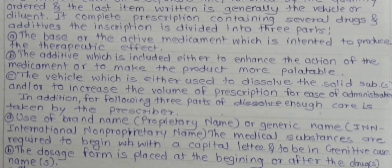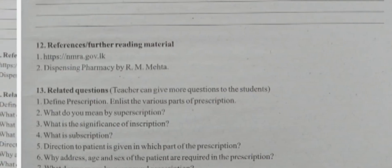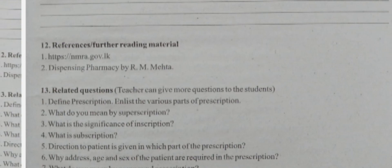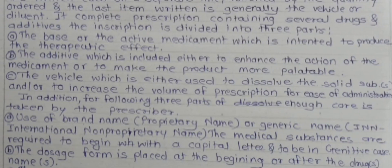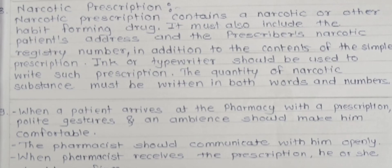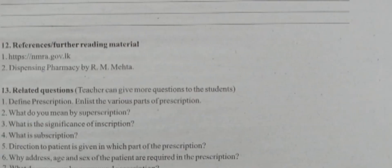Those are the significance points of inscription. Fourth question: what is subscription? Subscription is direction given to the pharmacist — it is the prescriber's instruction to the pharmacist regarding the dosage form to be prepared and number of doses to be dispensed.